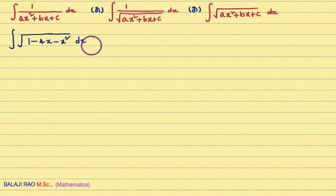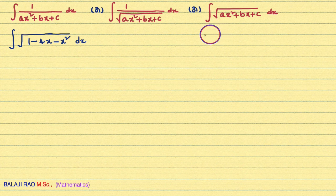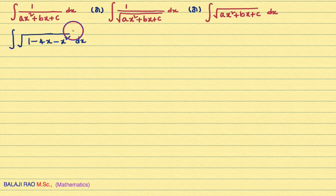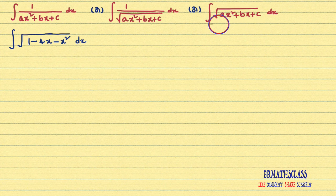If the given integral is any one of these three forms, the procedure is same. First, you identify which form this integral is. You can observe here that '1 divided by' is not there. So this integral is of the form: integral of square root of ax² + bx + c.